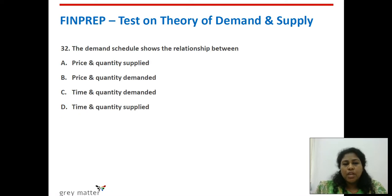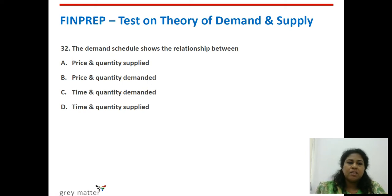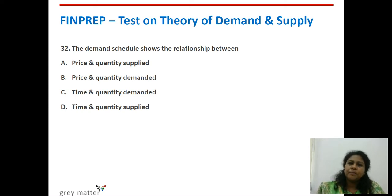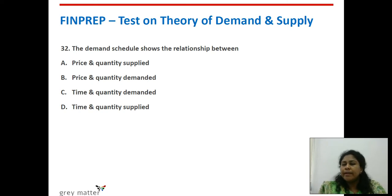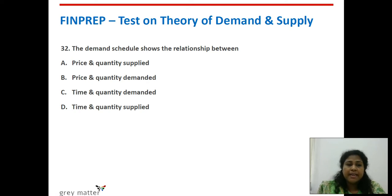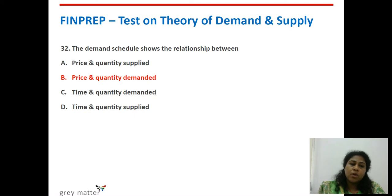Thirty-second question: the demand schedule shows the relationship between what? A demand schedule is a tabulated form of the law of demand — like a menu card showing for each price how much is the quantity demanded. It shows the relationship between price and quantity demanded. The right answer is option B — price and quantity demanded.